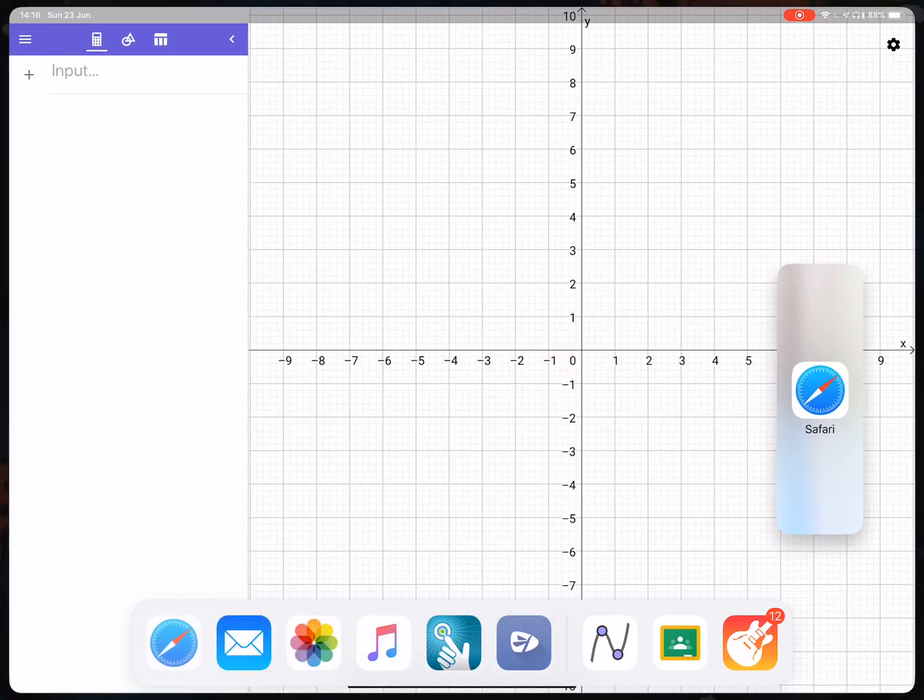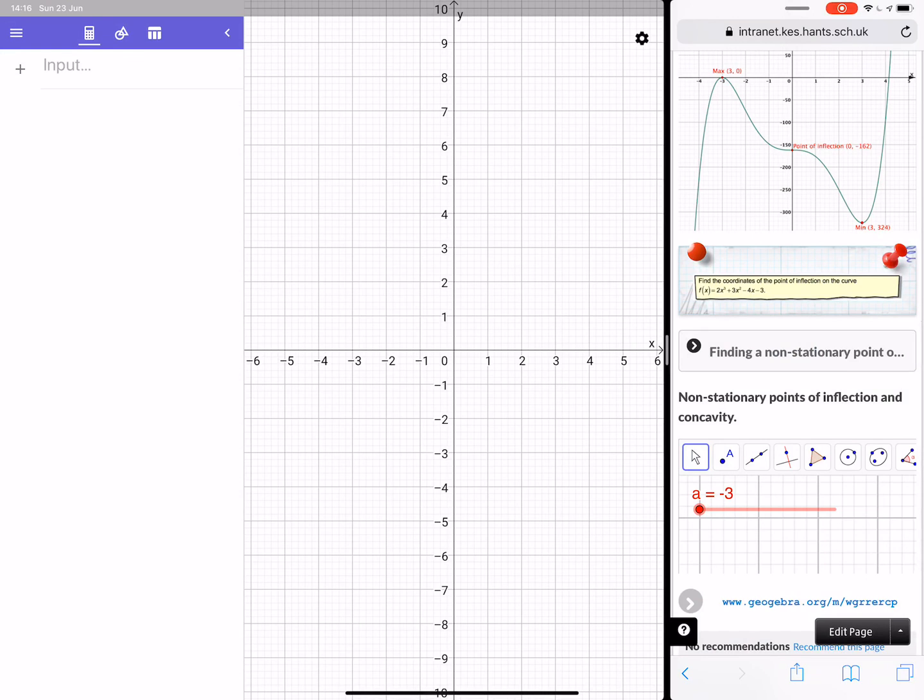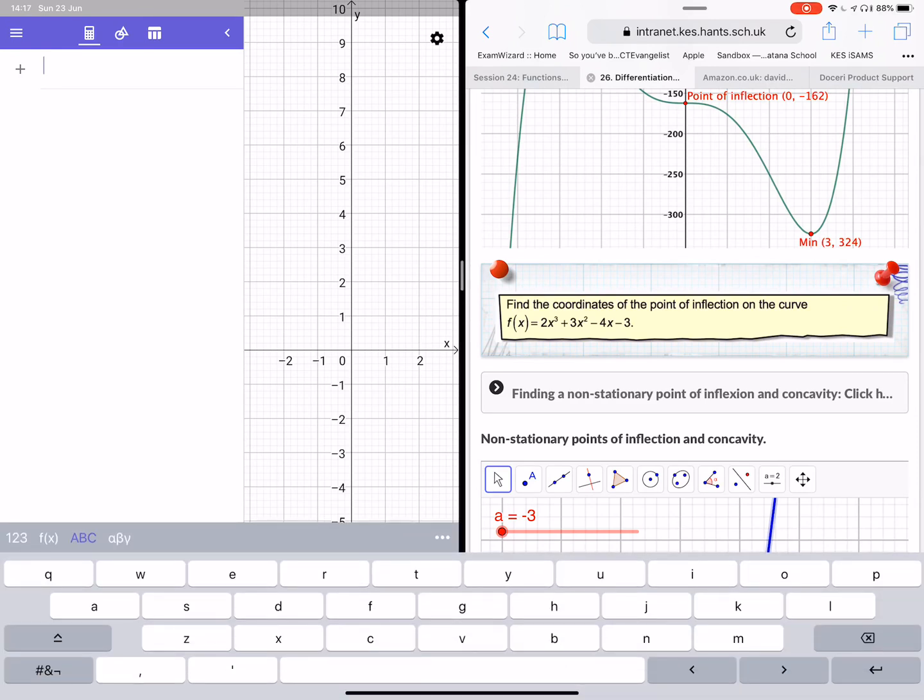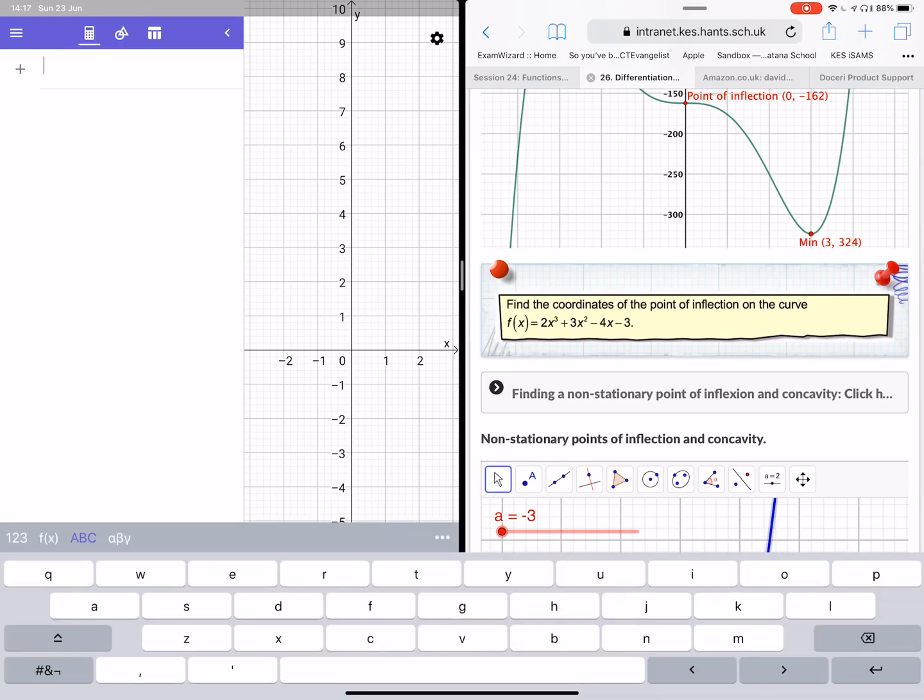This is the function I want to try and recreate. So when you press this you need to make sure you're in numbers. I'm going to want 2x to the power of 3. I need to press the arrow key now bring it back down.